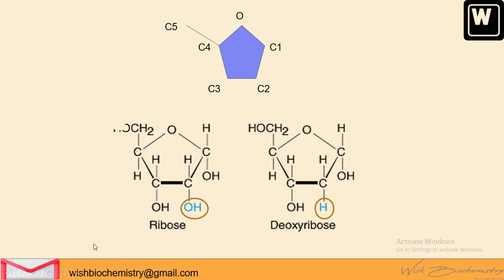Ribose contains a hydroxyl group and deoxyribose contains only hydrogen, as the term 'deoxy' means removal of oxygen. Ribose, starting with R, is present in RNA. Deoxyribose is the more stable form and is present in DNA — remember, deoxy starts with D, hence it is present in DNA.